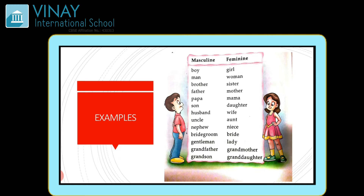Now, examples of masculine and feminine. The first example is boy and the feminine is girl. Boy is masculine and the feminine is girl. Again: men — women, brother — sister, father — mother, papa — mama, son — daughter, husband — wife, uncle — aunt, nephew — niece, groom — bride, gentleman — lady, grandfather — grandmother, grandson — granddaughter.